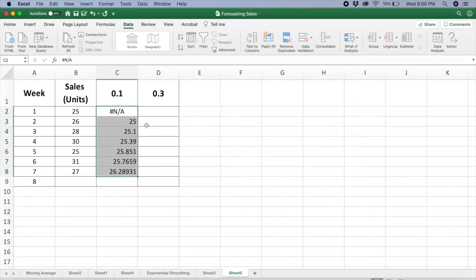So what you can see over here is that Excel has already forecast the values. And let's say if we want the value for week 8, you just need to drag the value down. So it will be 26.36.